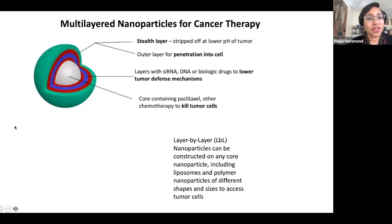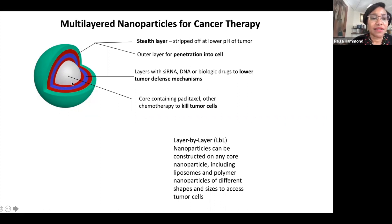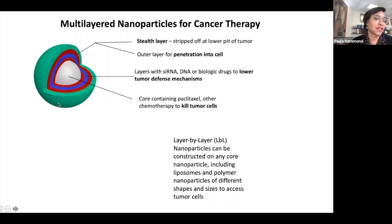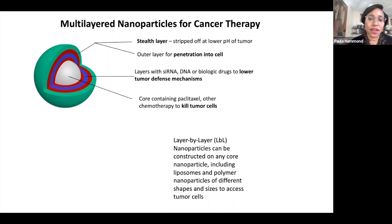We decided to use layer-by-layer to approach this by taking a core — a liposomal core or a polymeric nanoparticle — designed to carry a negative charge, then adsorbing a polycation onto that negatively charged system, then adsorbing a nucleic acid which is strongly negatively charged. That negatively charged system gives us a highly compacted amount of material — we end up getting something like 2,000 to 3,000 copies of, say, siRNA. The nucleic acid is chosen to essentially silence a pathway that enables tumor cells to survive in the presence of the chemo drug.